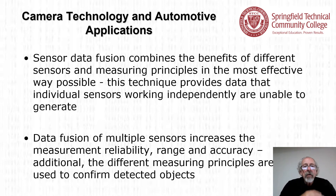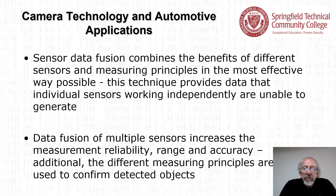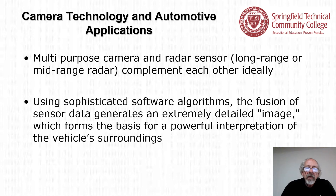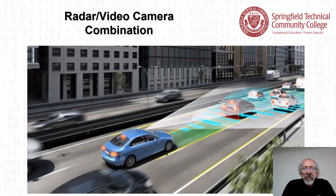Sensor data fusion combines the benefits of different sensors and measuring principles in the most effective way possible, providing data that individual sensors working independently cannot generate. Fusion of multiple sensors increases measurement reliability, range, and accuracy. The different measuring principles also confirm detected objects. A multi-purpose camera and radar sensor complement each other ideally, and using sophisticated software algorithms the fusion of sensor data generates an extremely detailed image forming a basis for powerful interpretation of vehicle surroundings.